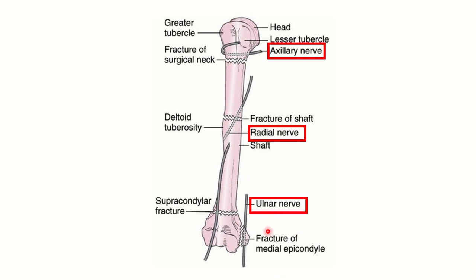We can see another part here — the medial epicondyle — so during fracture of the medial epicondyle there is a nerve, and this nerve is the ulnar nerve. So in the case of the humerus, there are four nerves at great risk of injury during fractures of different parts of the humerus. According to position: axillary, radial, ulnar, and median nerve may be damaged.